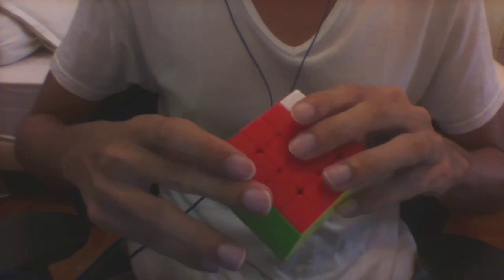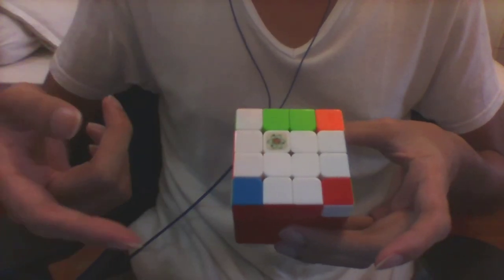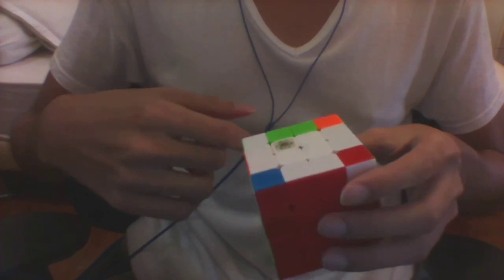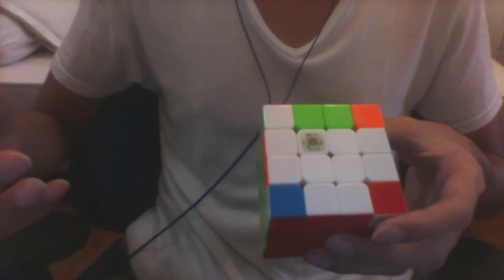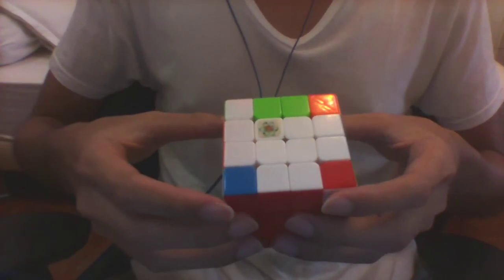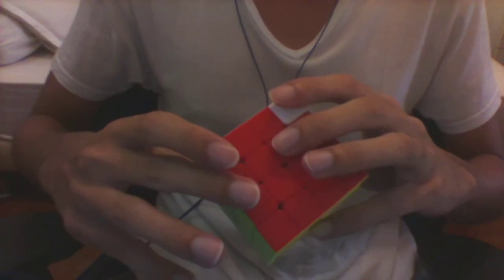What I normally do is determine the corner permutation first and how the parity out will affect it, followed by the corner orientation. This is the opposite order of how most people recognize COLL, but since we'll be doing most of the recognition during the OLL parity out itself, it doesn't matter as much.